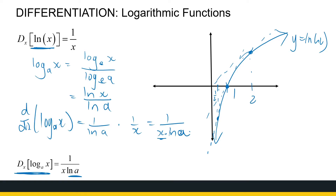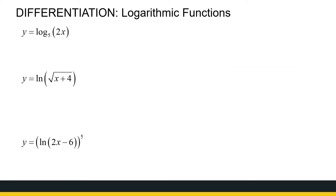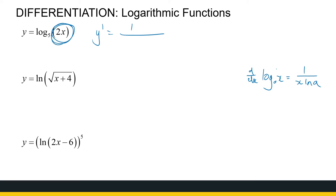Let's use these now because we're going to get functions that are a bit more messy. Here are three functions — they're more complicated and the chain rule will definitely come into play. The first one: log base 5 of 2x. The derivative of log base a of x is 1 over x ln a. In this case I've got log base 5 but my function is 2x, so the chain rule has to come in. It's 1 over my function — in this case 2x — times ln a, times the derivative of 2x from the chain rule, which is 2. We can simplify: that's 1 over x ln a. But we have to take into account whatever that function is.